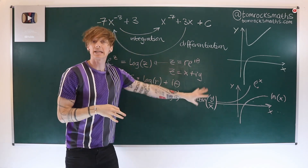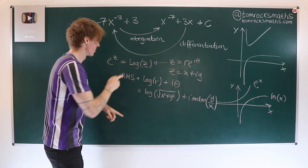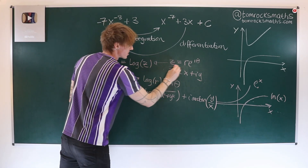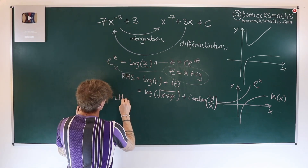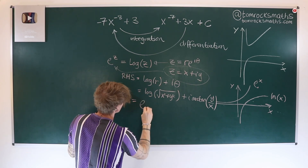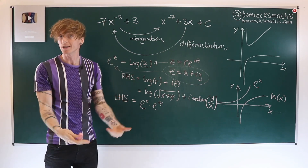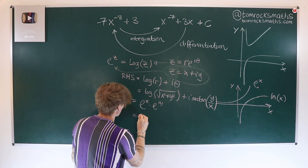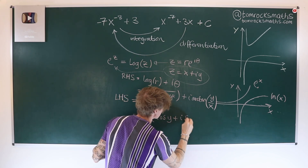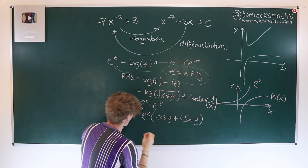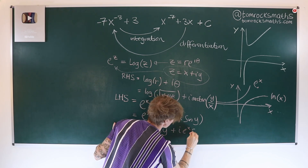Here I've just used the standard conversion from polar coordinates back to the Cartesian plane. Now on the left-hand side, we're going to use the x plus iy form of our complex number. So substituting that in, the left-hand side is now e to the x times e to the iy. But e to the iy — that's Euler's formula — so we can replace that with e to the x times cos of y plus i times sin of y. And if we split that up, that's e to the x cos y plus i e to the x sin y.